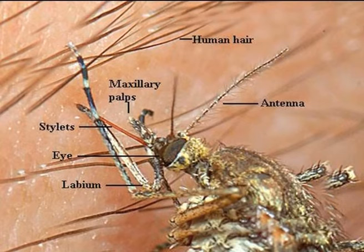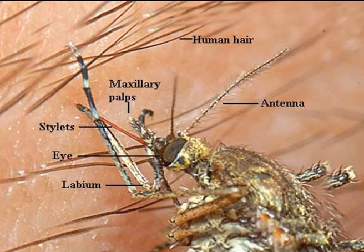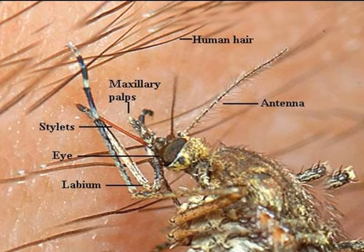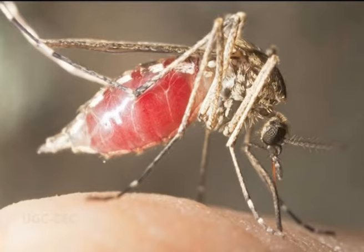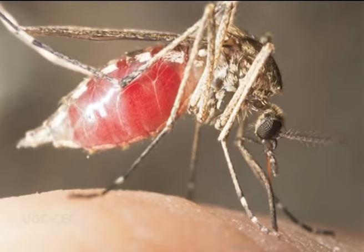Stylets: in female mosquitoes, all mouth parts are elongate; the labium encloses all other mouth parts like a sheath. The labrum forms the main feeding tube through which blood is sucked. Paired mandibles and maxillae are present together forming the stylets, which are used to pierce an animal's skin. During piercing, the labium remains outside the food item's skin, folding away from the stylets. Saliva containing anticoagulants is injected into the food item and blood is sucked out through a different tube.